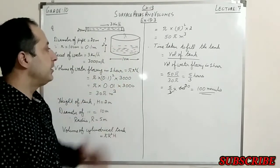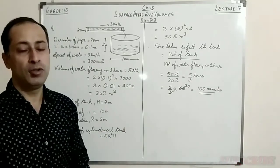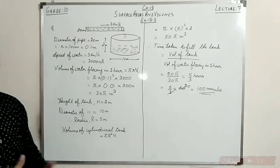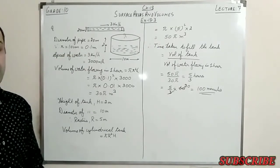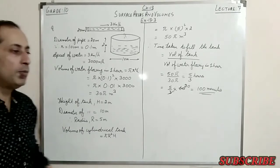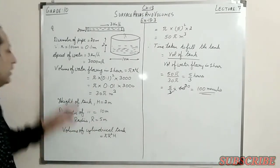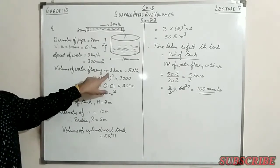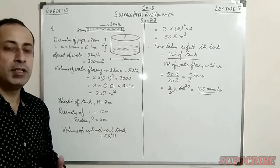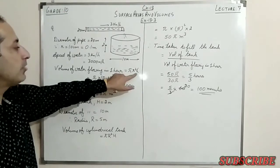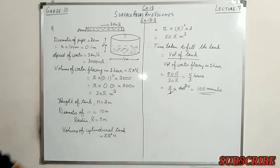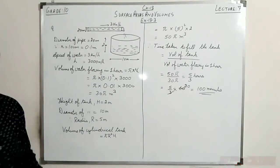The diameter of the pipe is 20 cm, so the radius becomes 10 cm. Converting to meters: 10 cm = 0.1 meter. Speed of water is 3 km/hr = 3,000 meters per hour, meaning the water moves 3,000 meters in 1 hour. The cylindrical tank has diameter 10 meters and height 2 meters, so the radius of the tank is 5 meters.